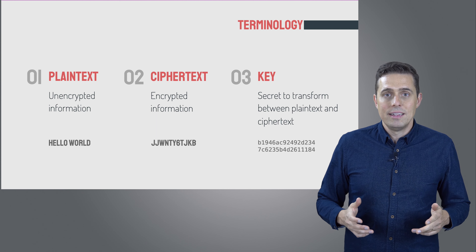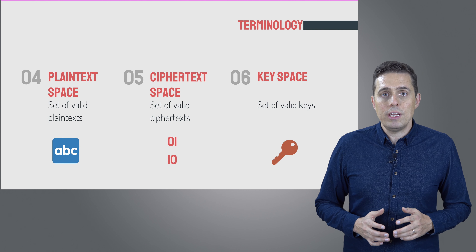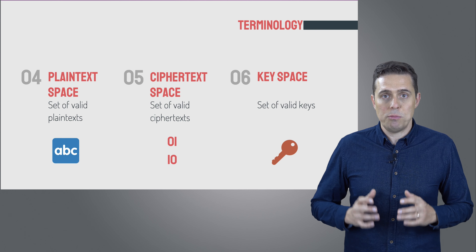Finally, the key. The key is the secret that's going to protect your message. Another important notion is called the plaintext space — it represents the set of all possible plaintexts that the encryption function can accept. Similarly, the ciphertext space represents all the possible ciphertexts the encryption function can produce. And finally, the key space represents the set of all valid possible keys.